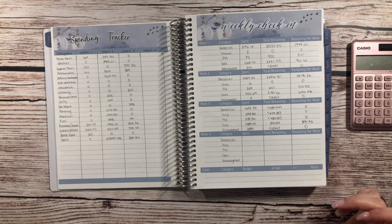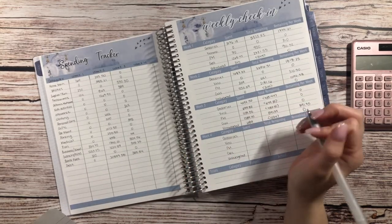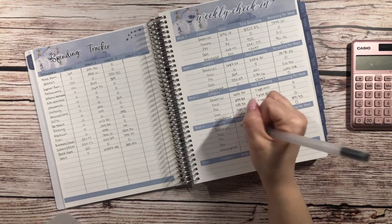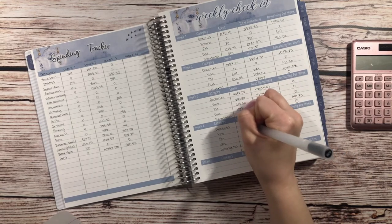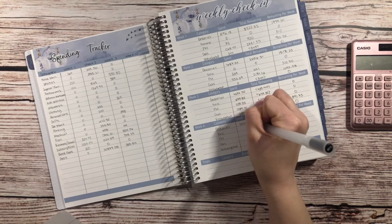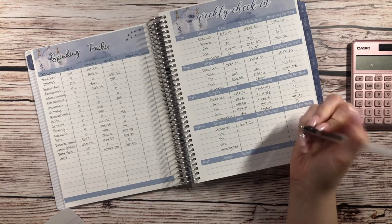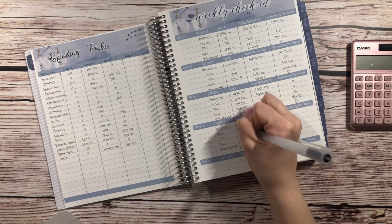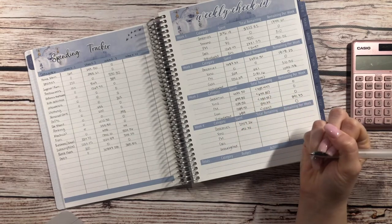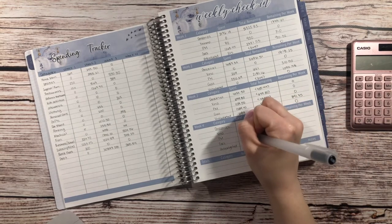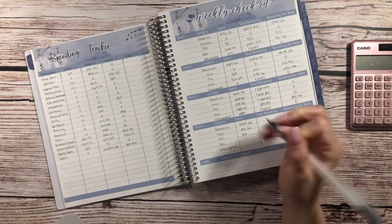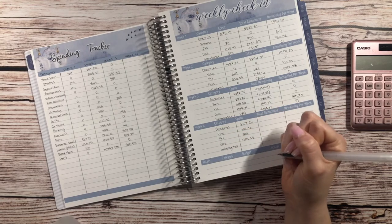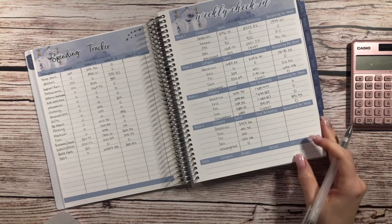So for groceries for week 4 we kind of went over a lot and we had already been over budget. So we spent 5,407 kroner on groceries. We spent 692.70 at the liquor store. We spent 300 in personal money, 1,292.38 for gas, and 0 for unbudgeted.